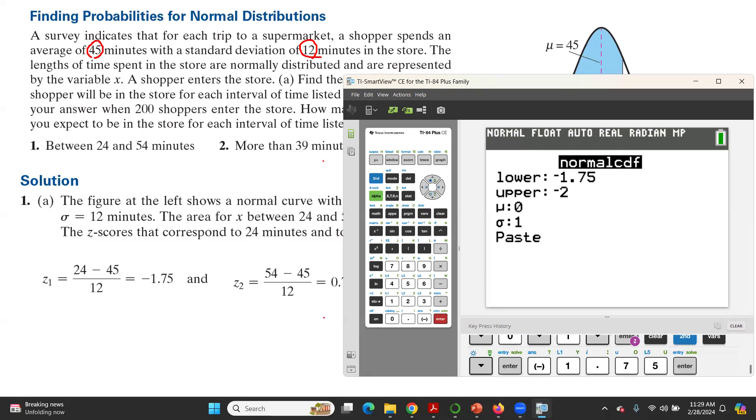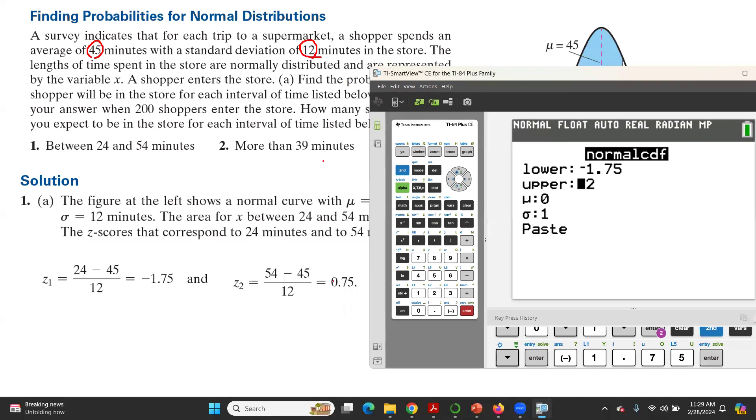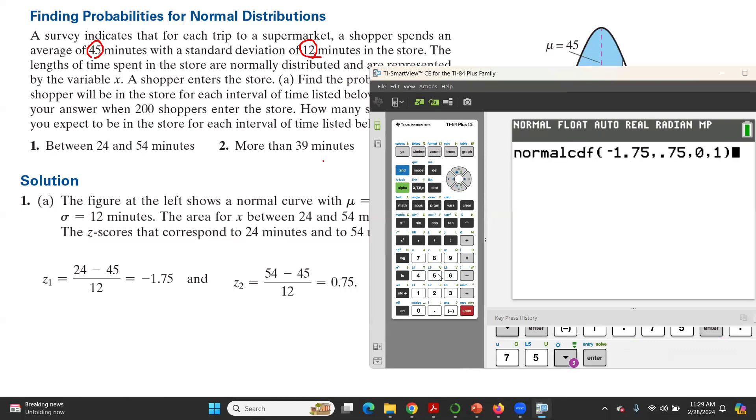Upper bound is 0.75. Mean for z is 0. Standard deviation for z is 1. If you hit enter twice, you get 73.33%.